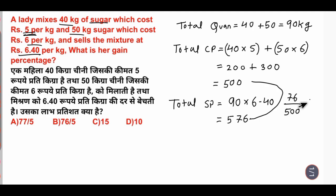Percentage into 100. 2-0-2-0 cancel. 76 by 5. Option B, 76/5. This will be the answer.